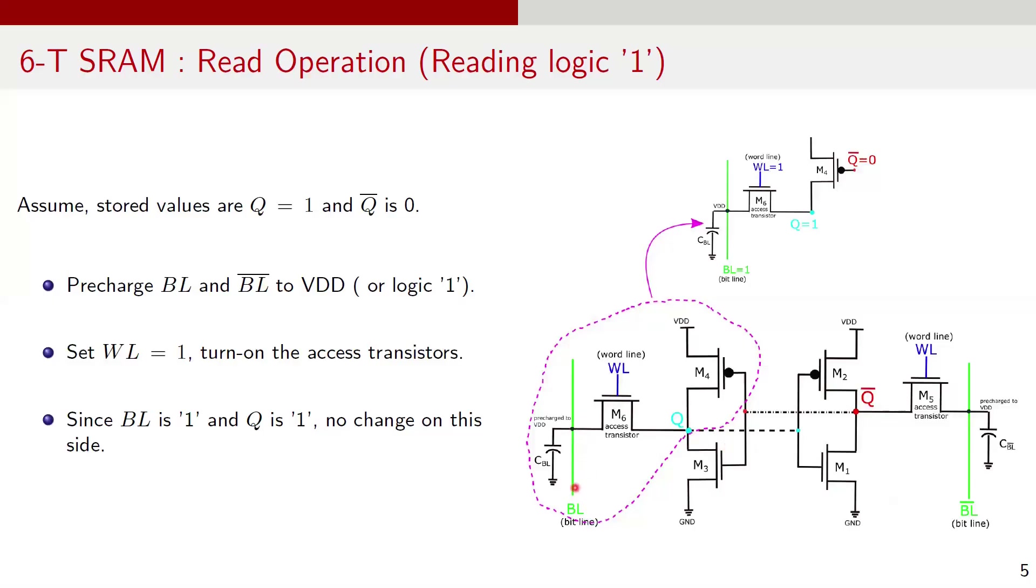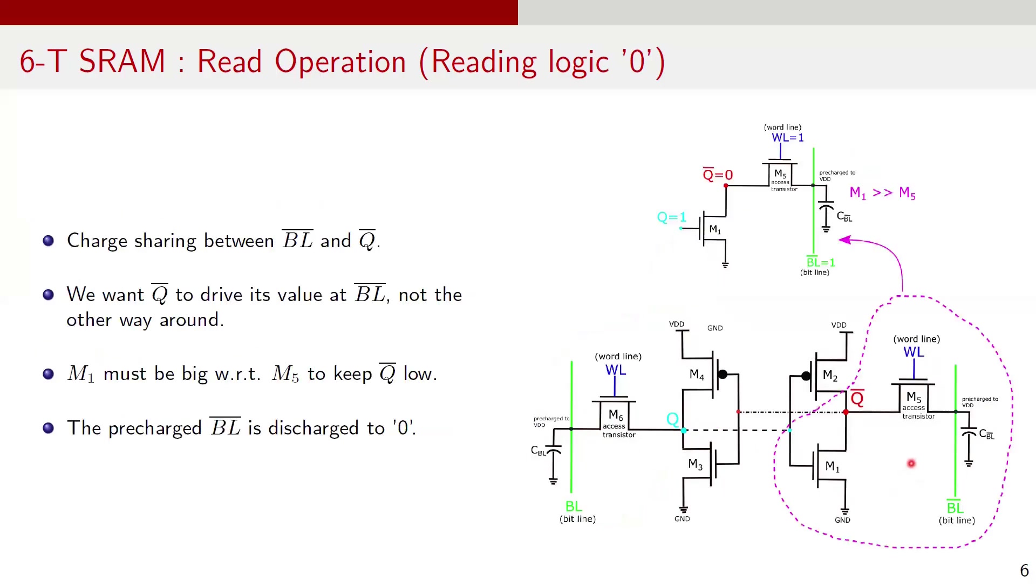On the left side where bitline is 1 and Q is also 1, there is no change and the data stability is maintained. However, on the other side or the right side, a charge sharing process occurs between bitline bar and Q bar. It's crucial that the value at Q bar drives the bitline and not the other way round. To ensure this, the transistor M1 must be stronger and larger than transistor M5 keeping Q bar to logic 0.